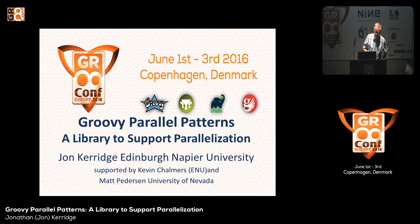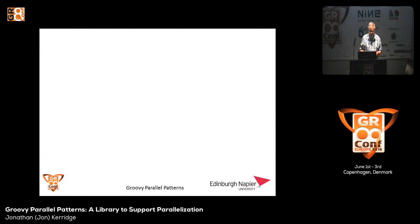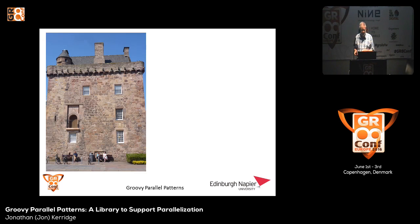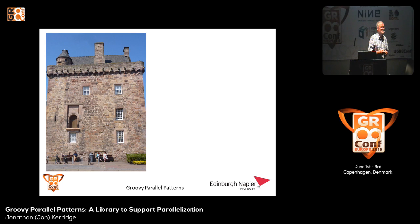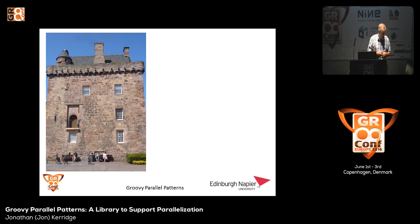Edinburgh Napier University — my colleagues Kevin Shalmers and Matt Pedersen have also contributed to this work. A bit about Edinburgh Napier University to start off with, because it's not one you might have heard of. We're one of four universities in the greater Edinburgh area, and we have Merkiston Castle, which was built in the 14th century and is the home of the Lords of Merkiston. Now it transpired that the 8th Lord of Merkiston, born in 1550 and who lived until 1617, was a little bit unusual.